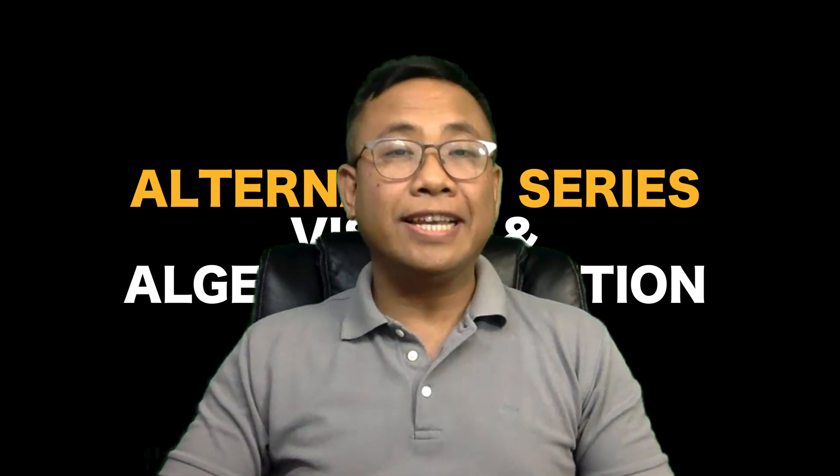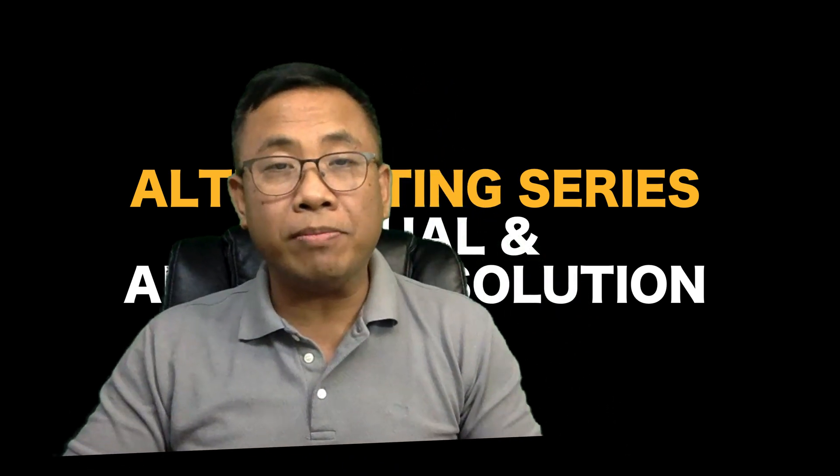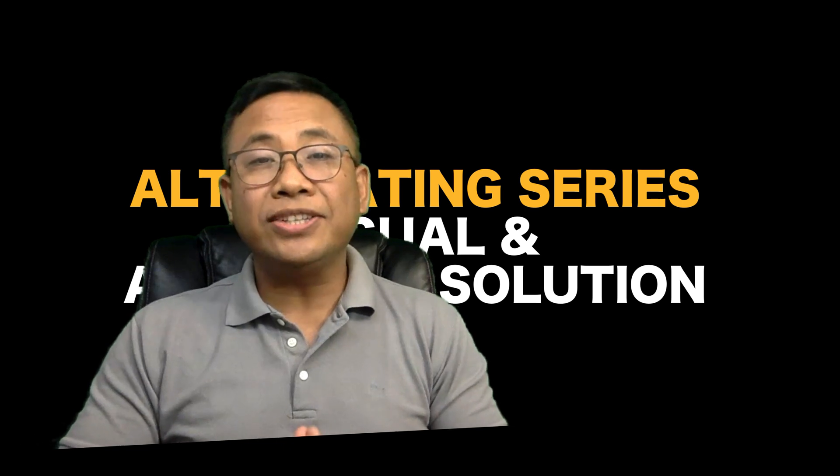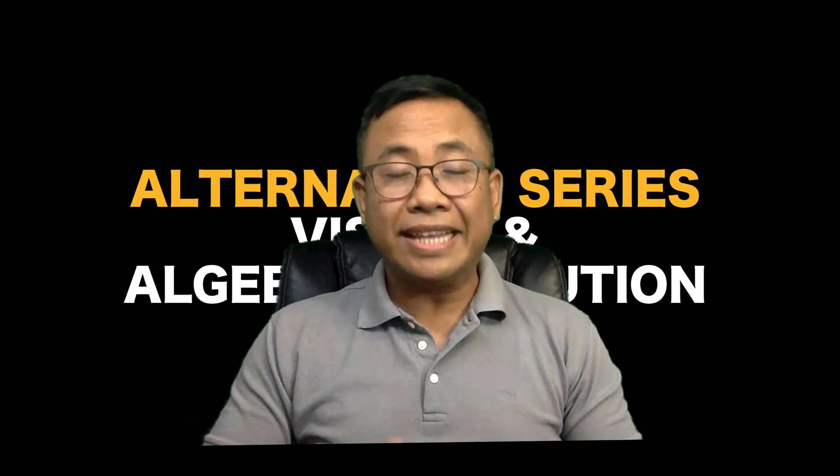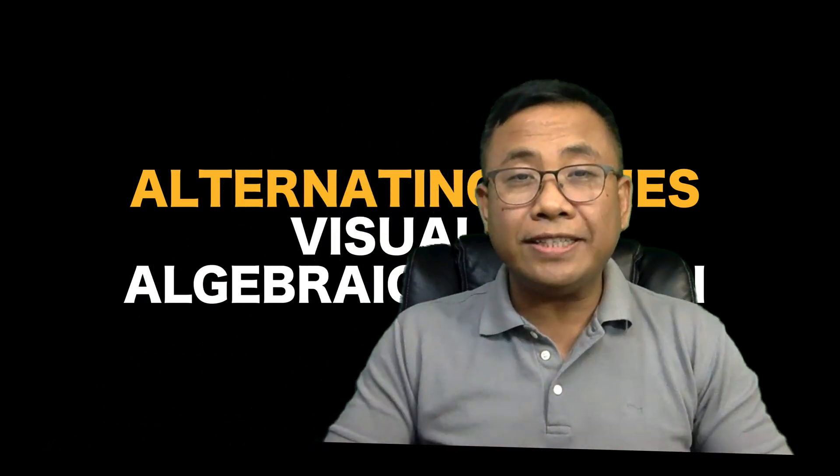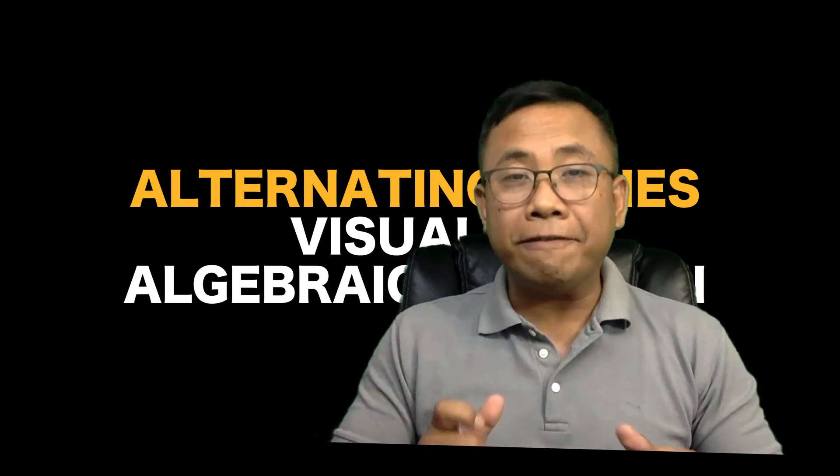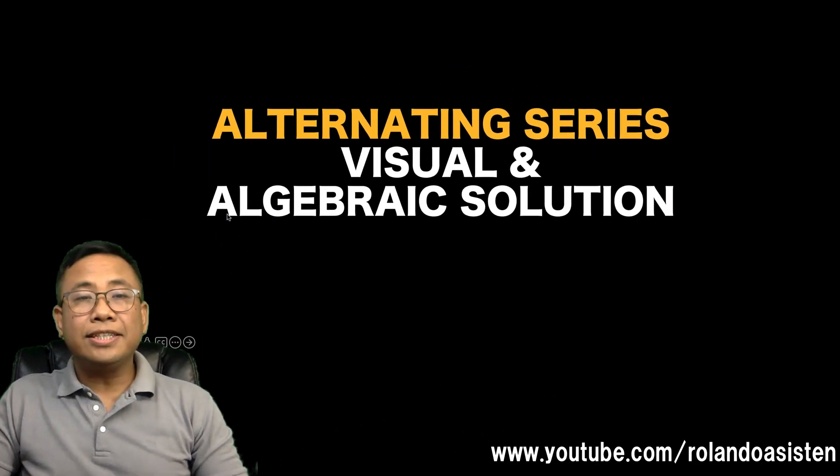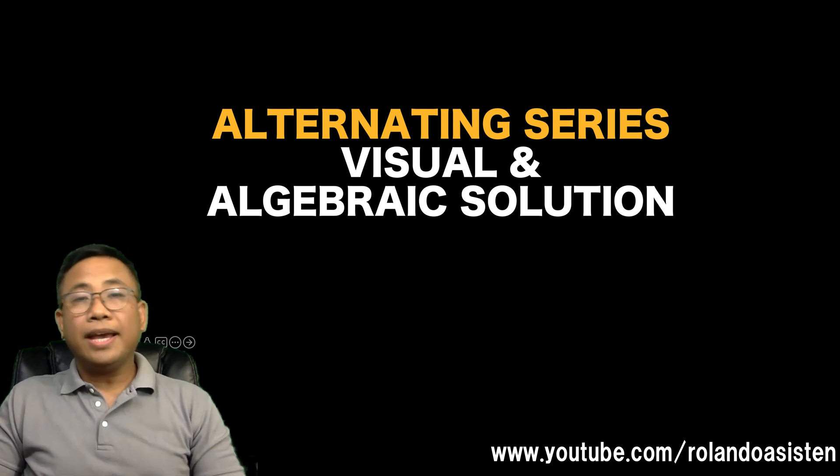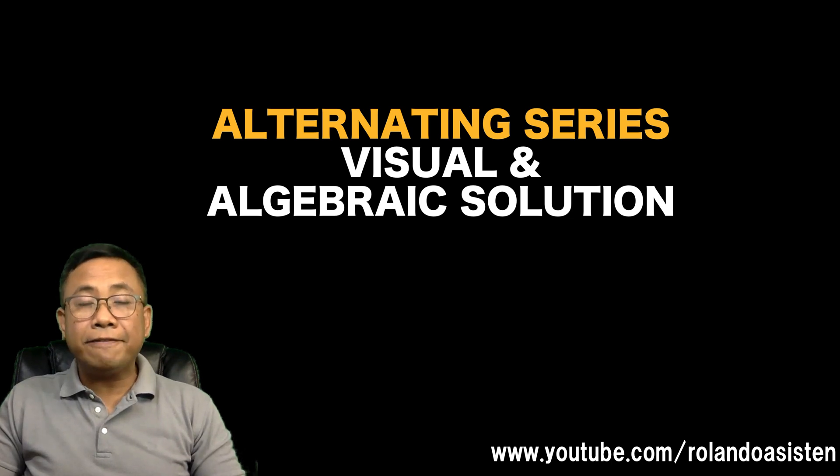For most of us, mathematics is about its efficiency in solving math problems, and many of us would not associate mathematics with beauty. But in this lesson, I'm going to show you two phases of mathematics, both the efficient and the beautiful. This lesson is about alternating series, and I'm going to show you two methods: the visual beautiful method and the algebraic efficient solution.